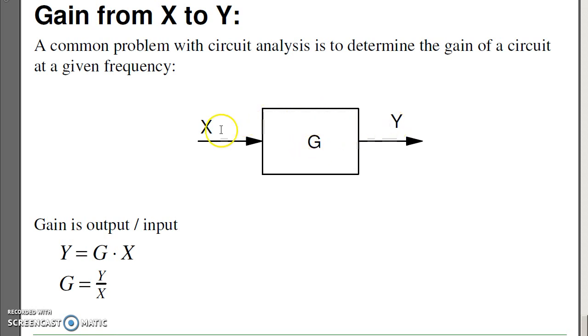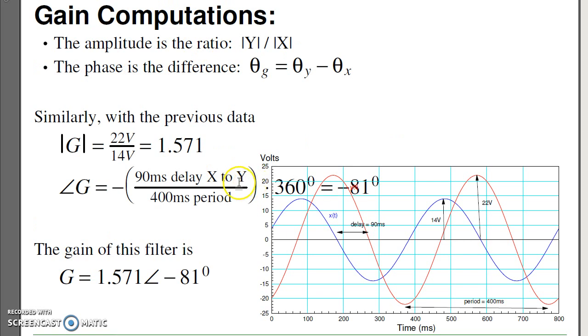Here we want the gain. So the gain is just output over input. When you divide complex numbers, the amplitudes divide and the angles subtract. We'll use that to say here, the gain is just the ratio. Output over input, 22 over 14. That's the gain, the amplitude. The phase shift is the difference in delays. Take the difference between the two zero crossings. Y lags x by 90 milliseconds. Converting to angle, 90 milliseconds is that percentage of the period minus 81 degrees. So this filter has a gain of 1.5 at minus 81 degrees.